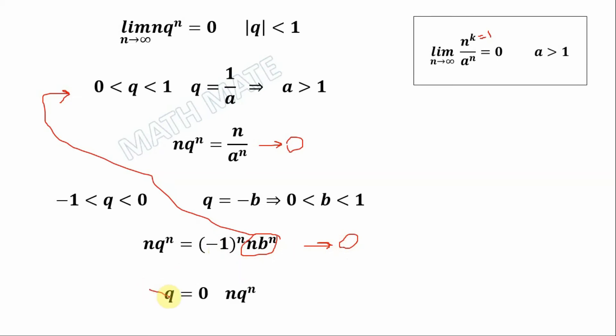In the case when q equals 0, we just put 0 instead of q, and n multiplied by 0 also goes to 0. In this way we have proved all cases for q, and that's the proof. If you